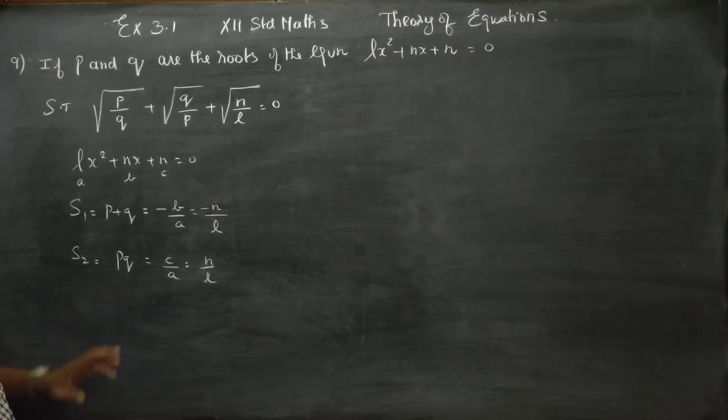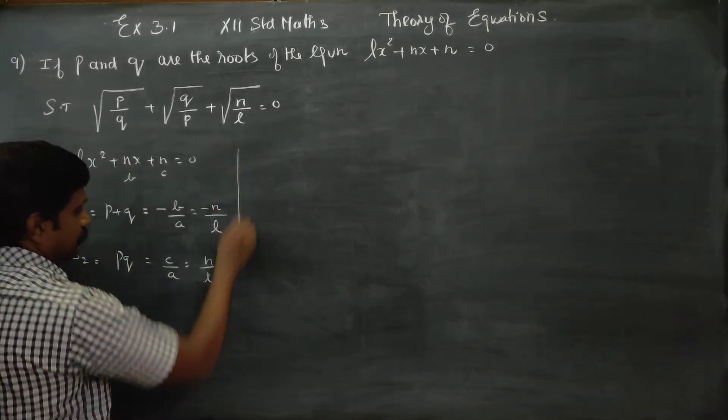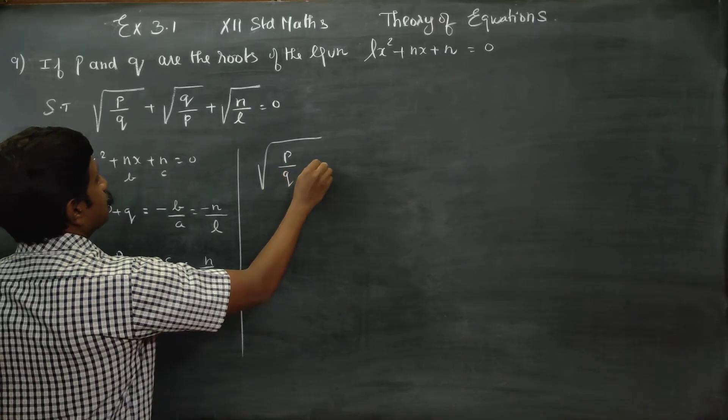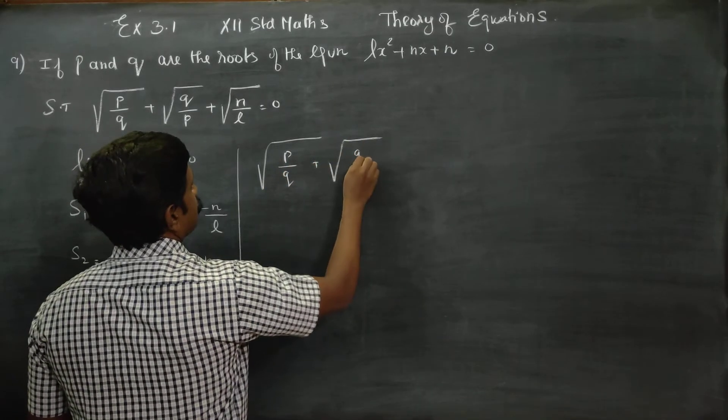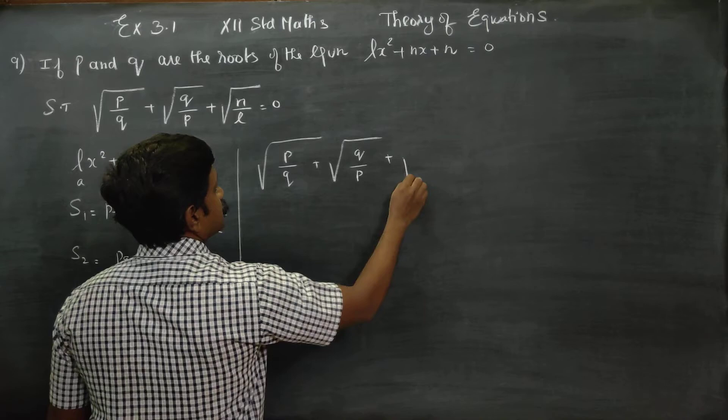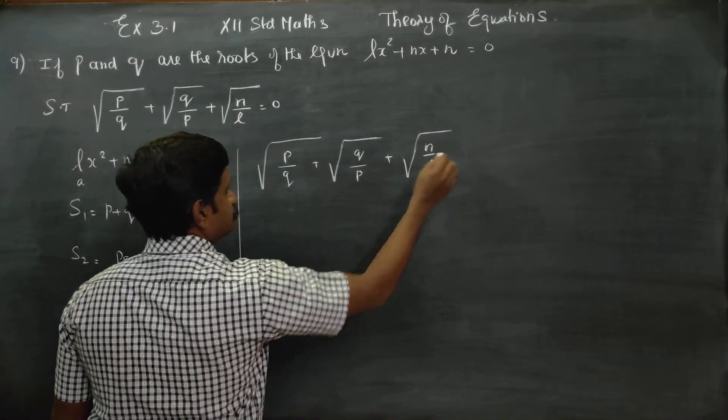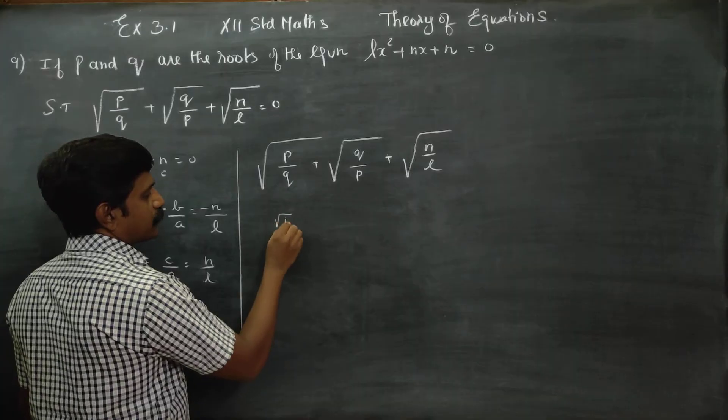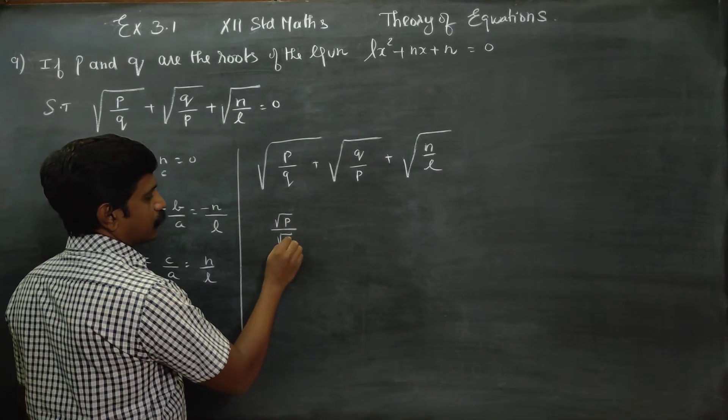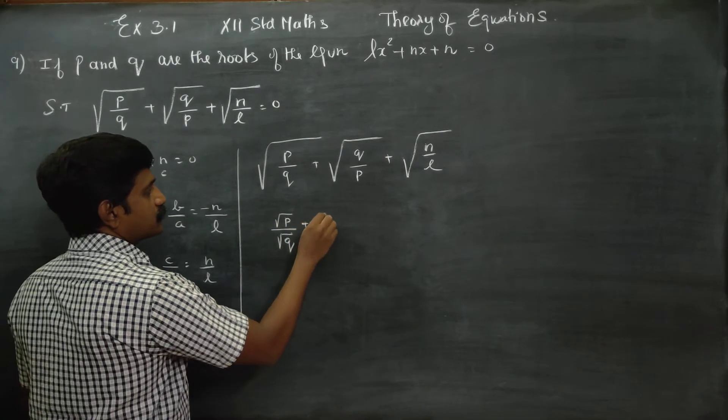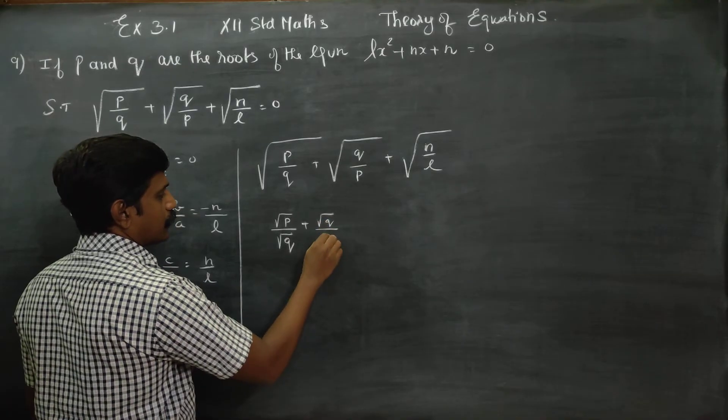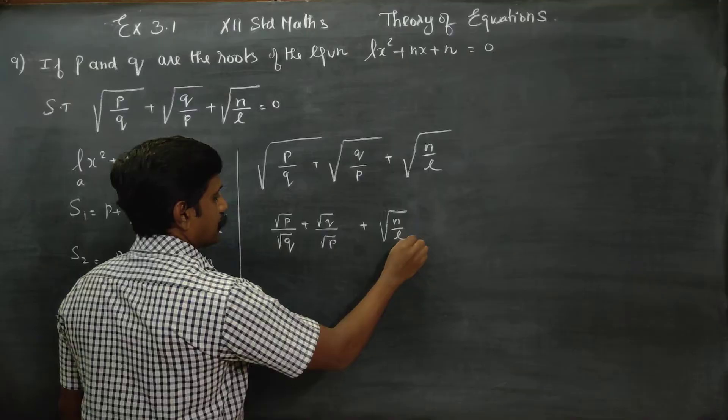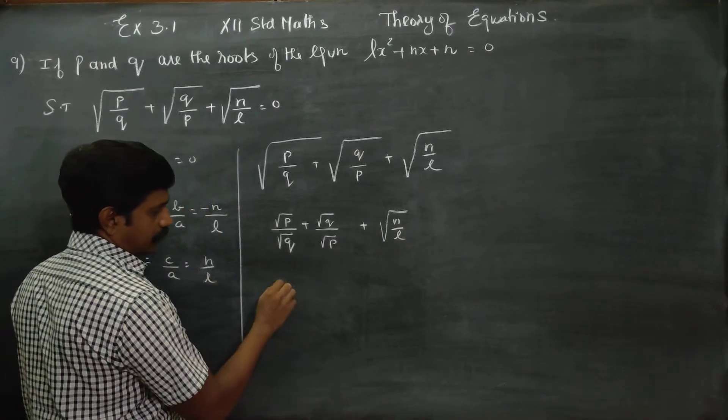S1, S2, P plus Q, and PQ are ready. First, I am starting with root of P by Q plus root of Q by P plus root of N by L. This can be written as root P by root Q plus root Q by root P plus root of N by L. If you take LCM...